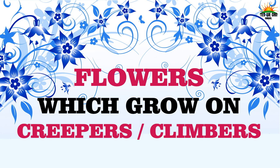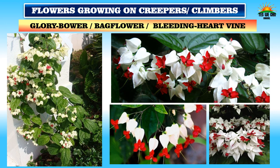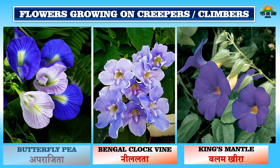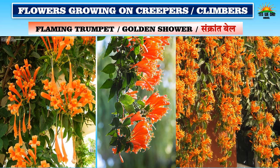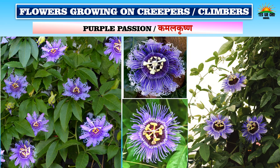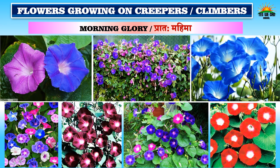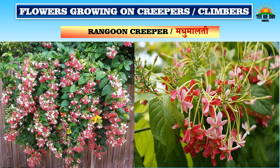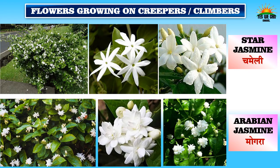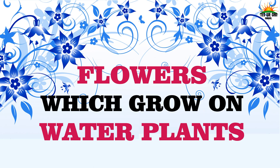Now let's see some flowers which grow on creepers or climbers. Glory bower, also called bag flower or bleeding heart vine. Butterfly pea, called Aparajita in Hindi. Bengal clock vine, called Neem Lata. King's mantle, called Balam Kheera. Flaming trumpet or golden shower, called Sankrant Bel. Purple passion, called Kamal Krishna. Beautiful morning glory, called Prath Mahima. Nature is the greatest artist! Rangoon creeper, called Madhu Malati. Star jasmine, called Chameli; and Arabian jasmine, called Mogra in Hindi.